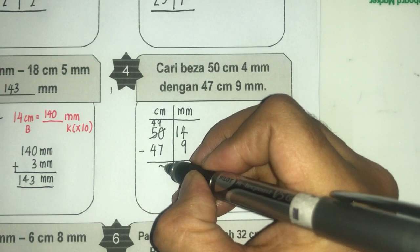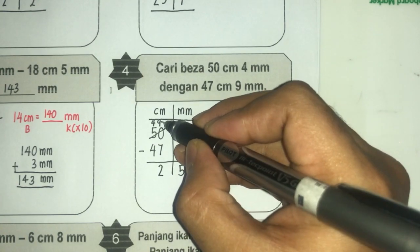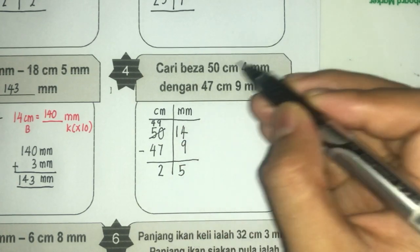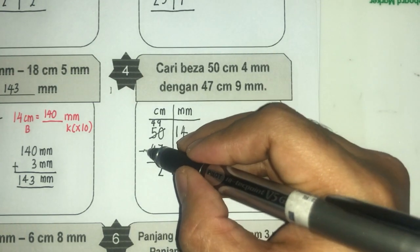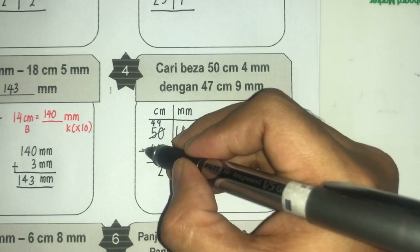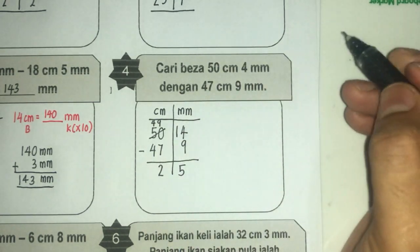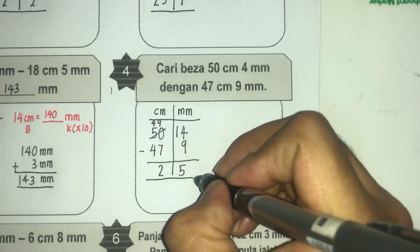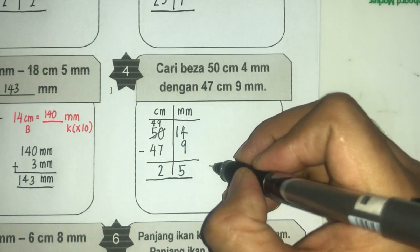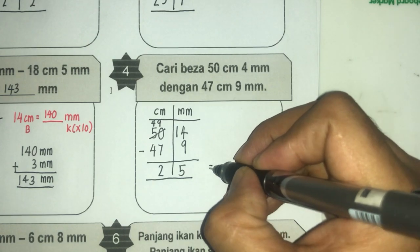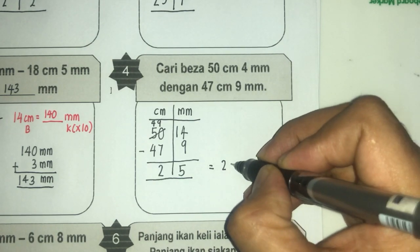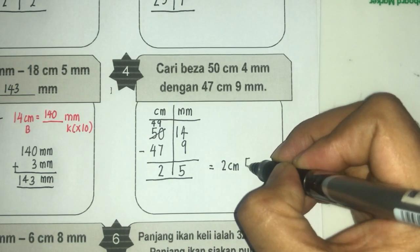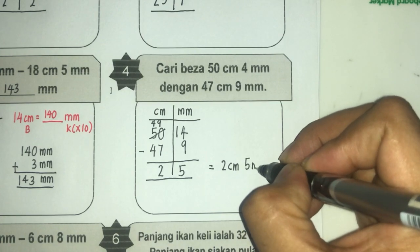9 tolak 7, dapat 2. Ni 49, bukan 50 lagi. 9 tolak 7, dapat 2. 4 tolak 4, dapat 0. Jawapan dia ialah 2 cm, 5 mm.